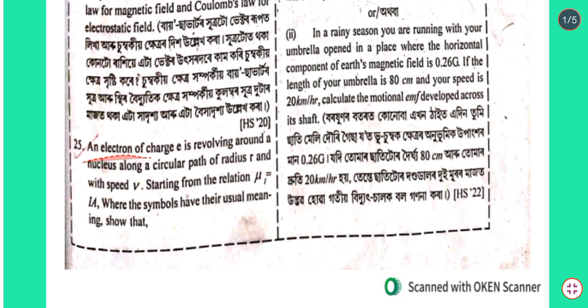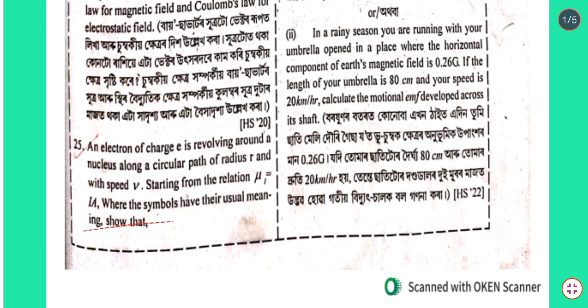Question number 25: An electron of charge e is revolving around a nucleus along a circular path of radius r and with speed v. Starting from the relation μ_L = i × A, where the symbols have their usual meaning, show that μ_L = evr/2 and μ_L = eL/(2mₑ), where L is the magnitude of angular momentum of the electron of mass mₑ.